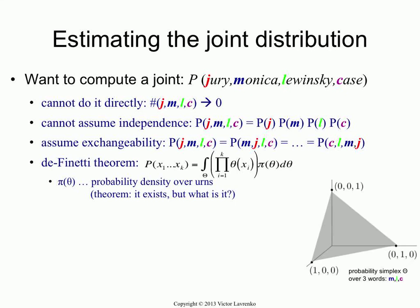So here is where you have to get creative, and you have to pick somehow how you're going to assign probabilities to different thetas. So what we're going to do is, again, this is our simplex, and we have a three-word vocabulary for Monica, Lewinsky, and case. So this is the Monica corner, the case corner, and the Lewinsky corner.